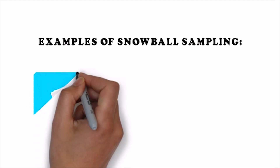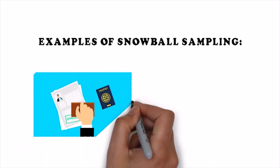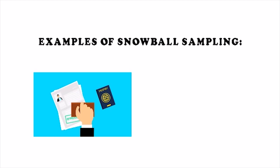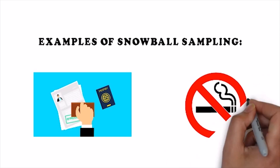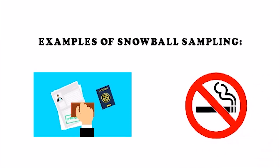In snowball sampling, through one participant you can reach other people who are hard to reach. For example, if we want to find out about undocumented immigrants, if we locate one such immigrant, they can tell us about others. Similarly, if we want to survey homeless people, identifying one individual can lead us to others. Additionally, drug abusers and elite club members' data can also be collected in this way.